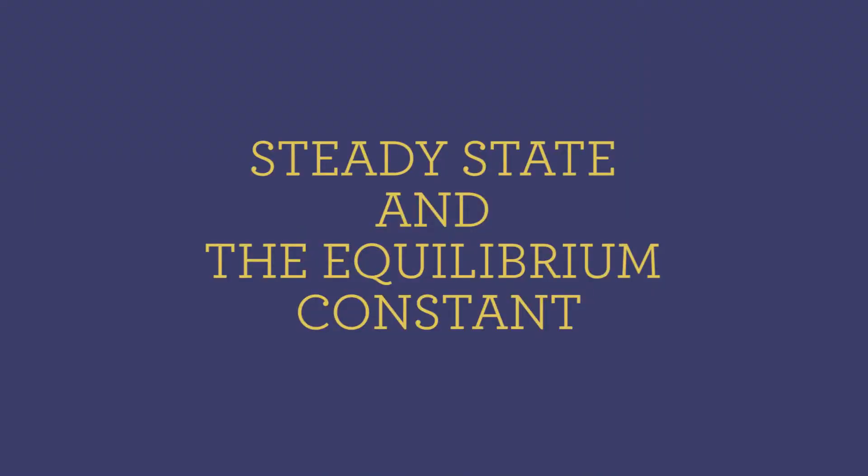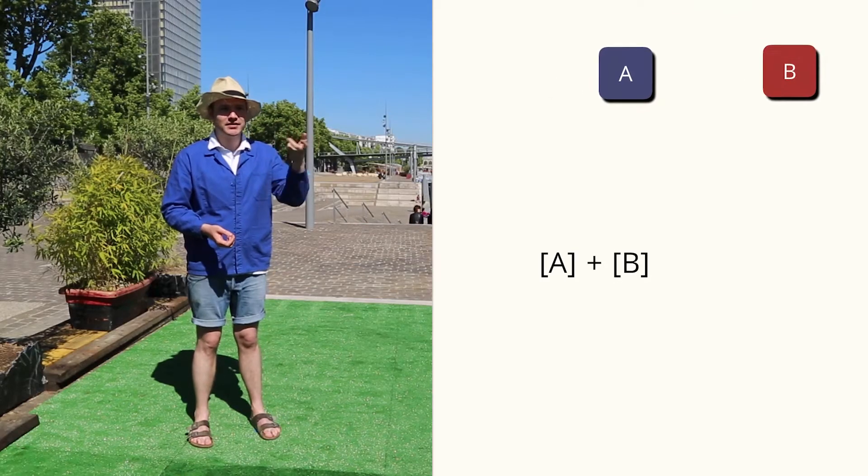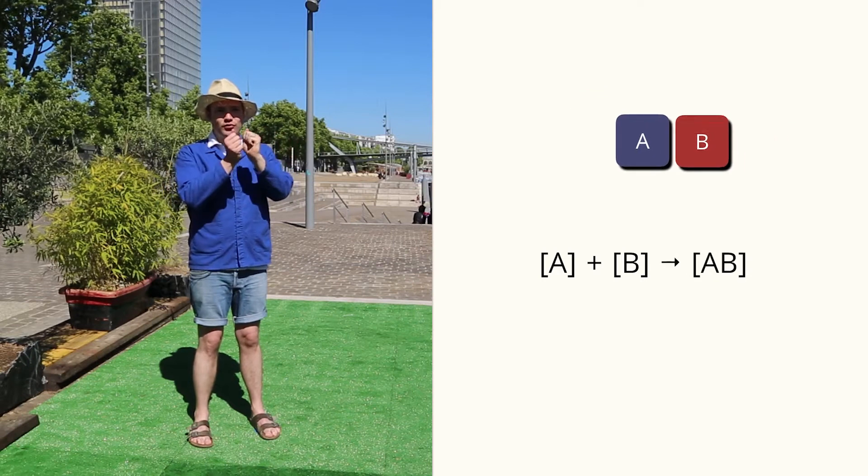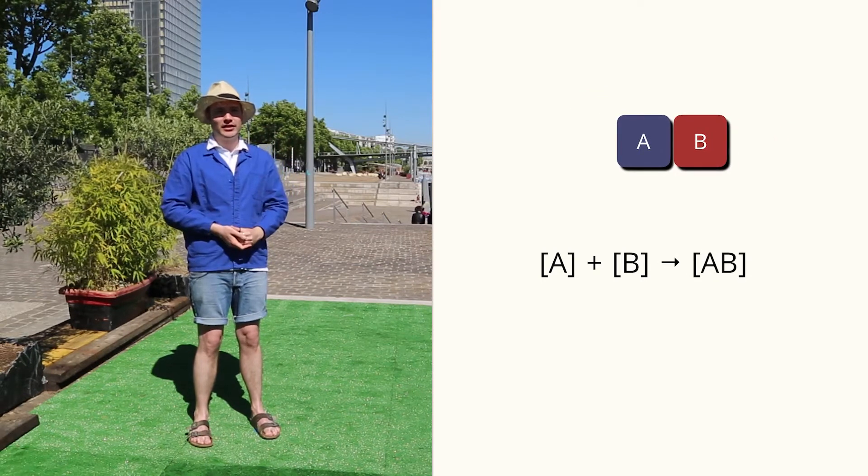A molecule called A is moving around randomly inside the cell. When it hits another molecule, B, they stick together and form a complex.